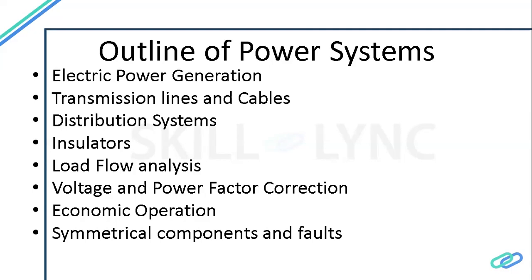Next is voltage and power factor correction. For example, if there are inductive loads or machines, there will be a power factor problem in the system. It can be compensated using active power compensation, passive compensation, or batteries with passive compensation. If the power factor is disturbed, the efficiency of the system comes down and there are economic operation problems — the cost impacts the consumer if power factor is not maintained properly.